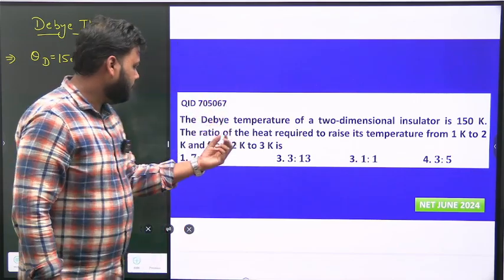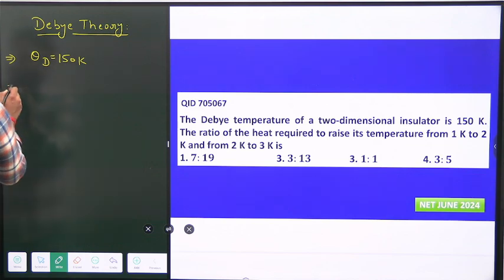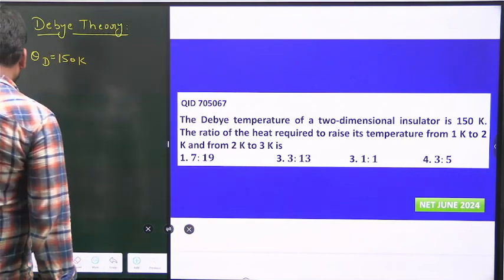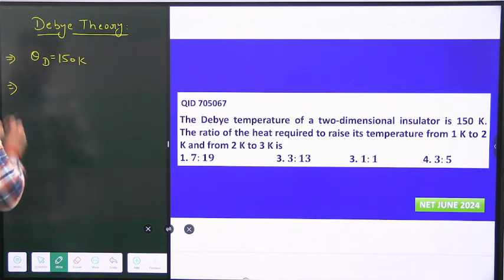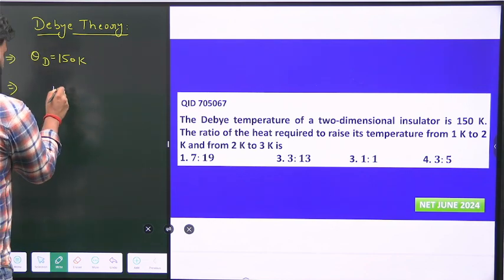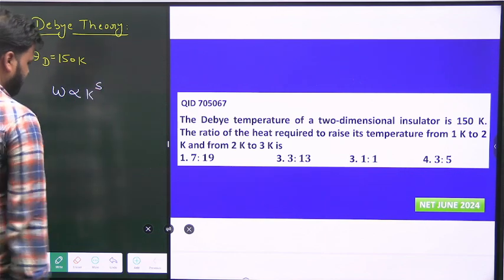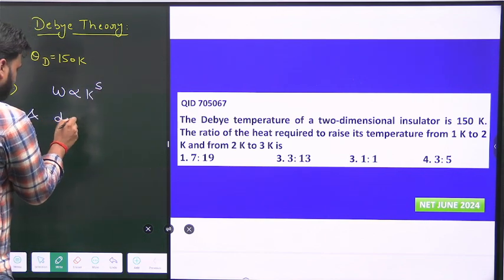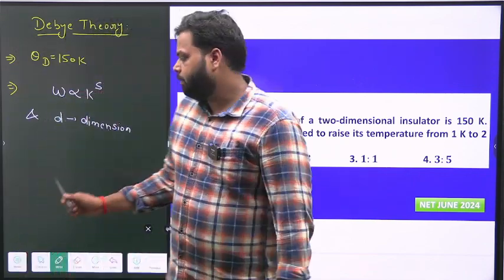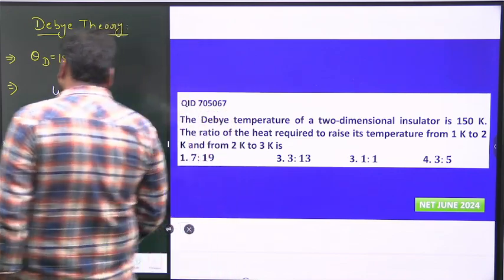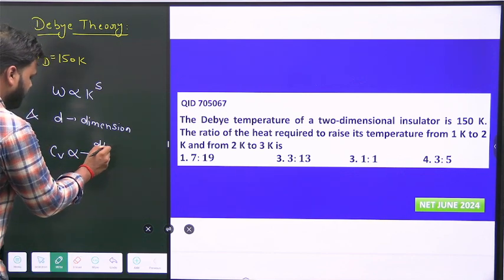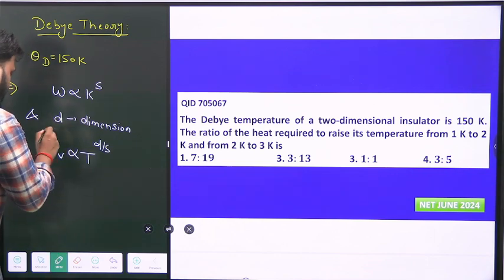If you go for the derivation, it's quite lengthy, but in class I have told students that we can use this approach. If the dispersion relation is given as omega proportional to K to the power s, and D is the dimension, then the specific heat at constant volume C_v will be directly proportional to temperature to the power d/s. This is the standard general relation.